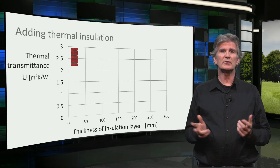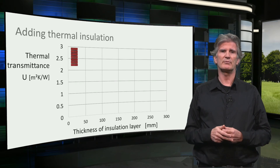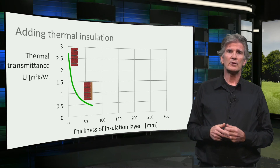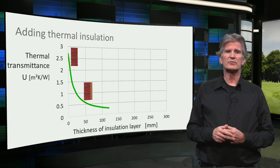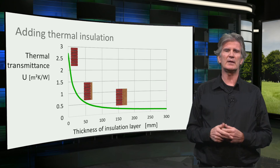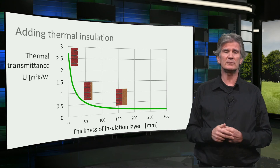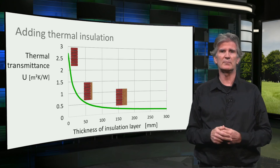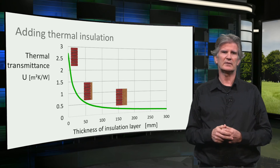Adding 50 mm of insulation material reduces the heat transmission losses by almost a factor of 5. You can do this calculation for different insulation thicknesses, and then you get this graph. What you can learn from this graph is that the first centimeters of insulation are the most effective. Adding more insulation, if you already have 20 cm or more, has very little effect.